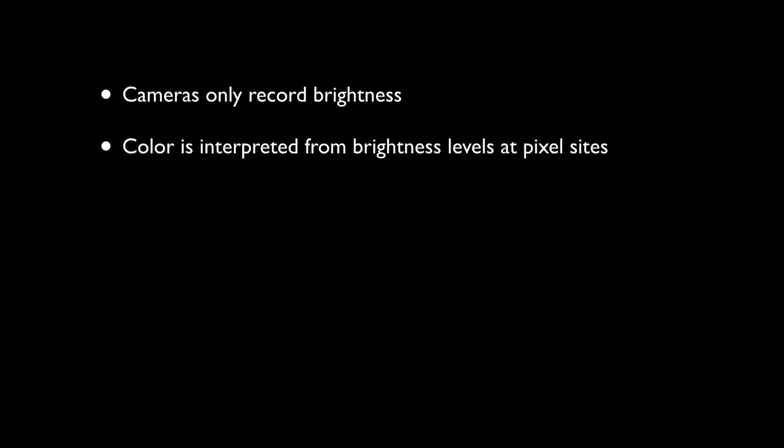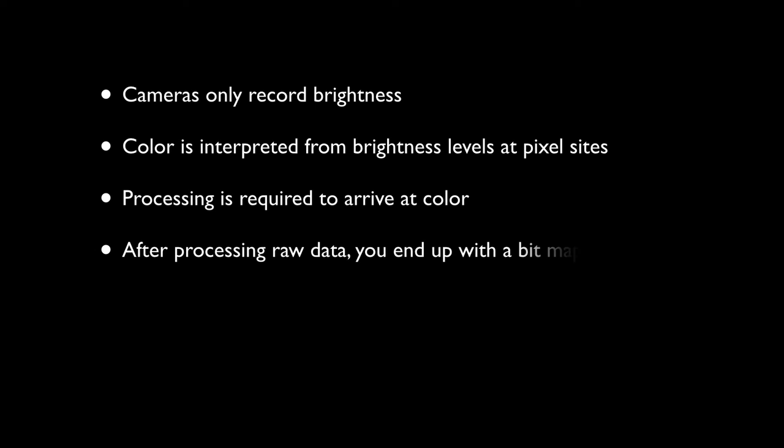It is important to realize that digital cameras only record brightness values for the pixels representing the image. Color is interpreted from these brightness values by interpolating the missing data from the neighboring pixels. This requires a fair amount of complex calculation known as a demosaicing algorithm, which happens in a separate stage from the actual image capture.